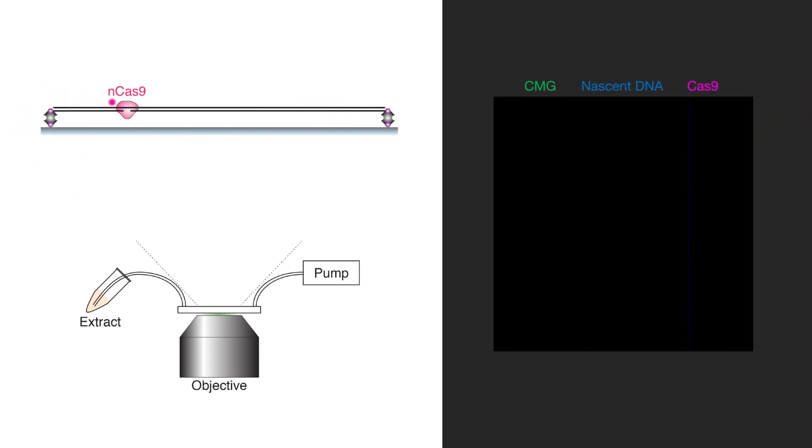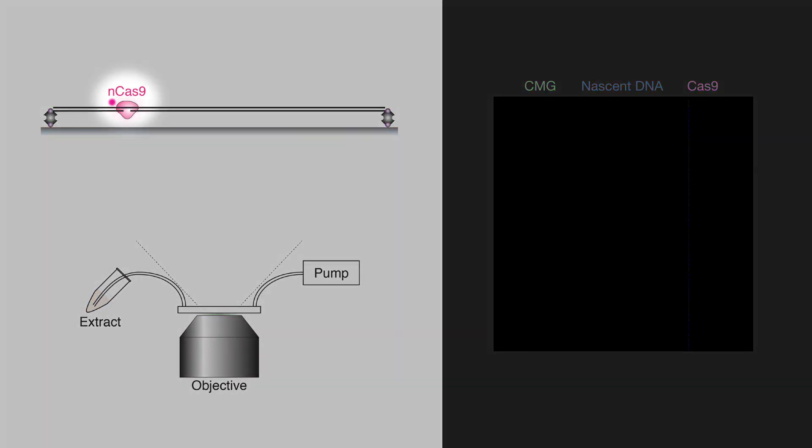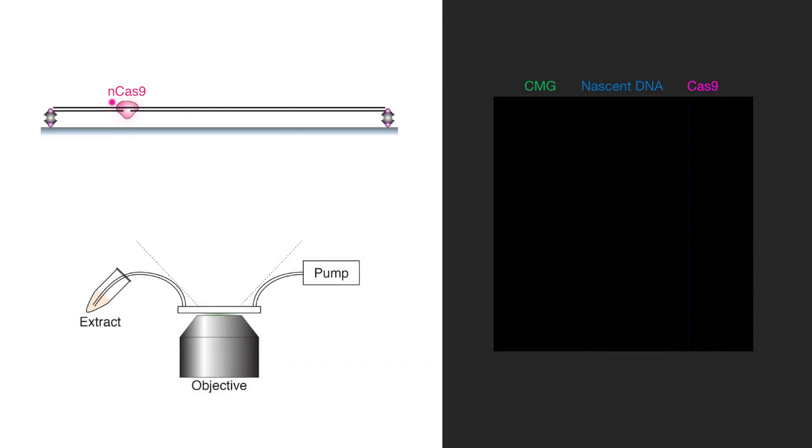He then repeated the experiment in the presence of a Cas9 nicking enzyme that is fluorescently labeled with a different dye, so that we would induce a nick in a particular location that we could mark in the microscope.